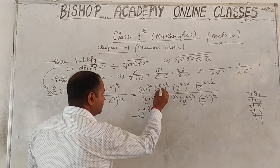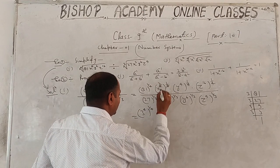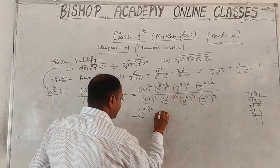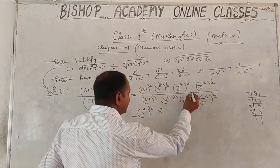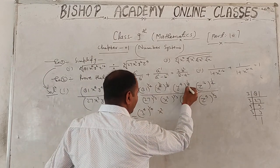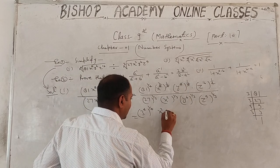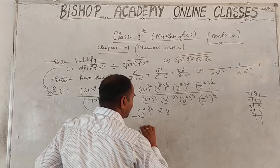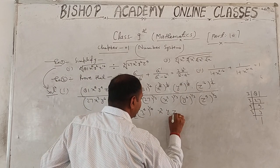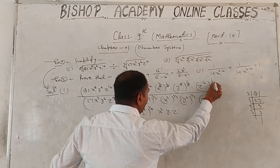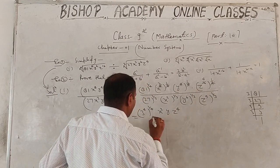Continuing the simplification: x^(8 × 1/4) = x², y^(4 × 1/4) = y¹, z^(16 × 1/4) = z⁴ in the numerator. In the denominator: x^(3 × 1/3) = x¹, y^(6 × 1/3) = y², z^(9 × 1/3) = z³. Powers cancel step by step.